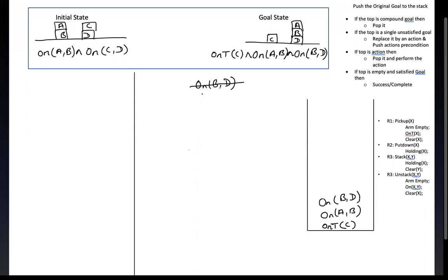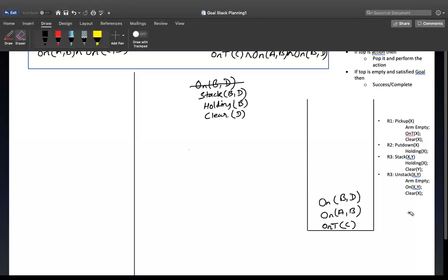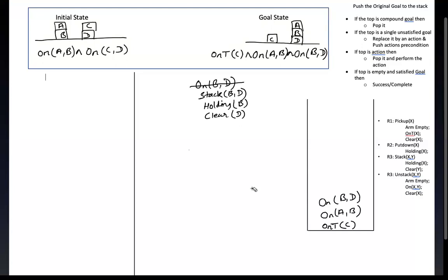First we write the action. The action is stack(b, d). What is the precondition of stack? The first is holding b, and the second is clear d. This is the precondition. I can write it here. In the stack, what I have to do — I have to erase it and rewrite with the action and preconditions.